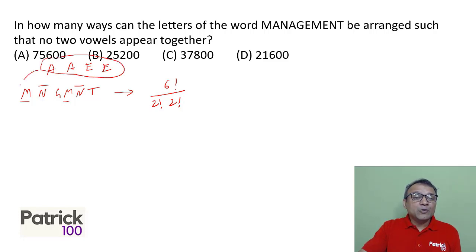Now, A, A, E, E cannot be together. So they have to be between these alphabets. How many places are there between these alphabets? If you look at the seven places: one, two, three, four, five, six, seven. So in these seven places, you need to choose four places. Seven C four. In these seven places, you need to choose four places because A, A, E, E has to be arranged. And how many ways can they be arranged? Four factorial upon two factorial, two factorial. Four factorial is four letters. There are two A's and two E's, so two factorial, two factorial.